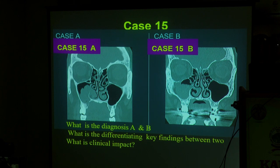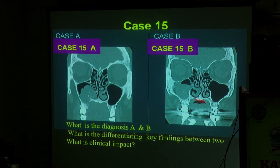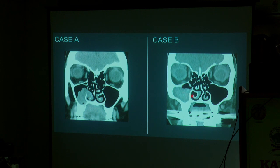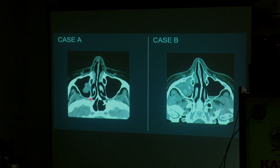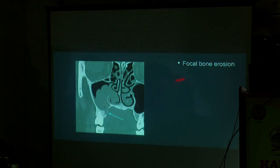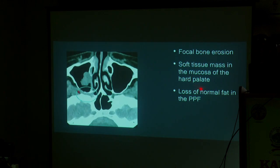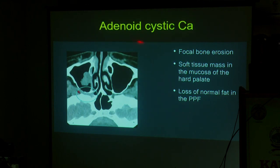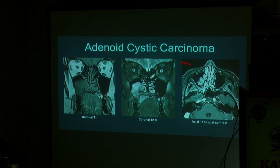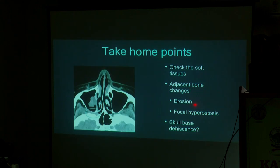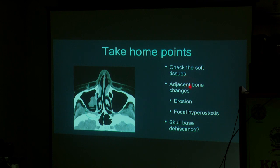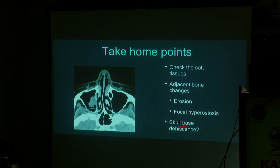Case number fifteen: two patients — look almost similar. There is a subtle finding giving a clue for diagnosis. You have to be familiar with it. Both show polypoid lesions. But look at the pterygopalatine fossa — something is abnormal there, and the fat plane is not preserved. That means we are dealing with a malignant process. Focal erosions and soft tissue mass in the hard palate, with loss of normal fat plane in the pterygopalatine fossa — this is adenoid cystic carcinoma presenting almost like a mucosal polyp. The other case is a simple mucosal polyp.